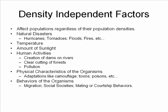Physical characteristics of organisms themselves — such as camouflage, toxins, and poisons — protect organisms regardless of how dense the population is. Behaviors of organisms, such as migration, social societies, and mating or courtship behaviors, also help affect population density.